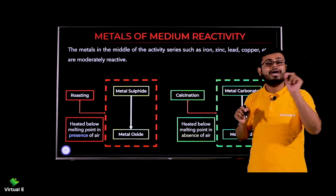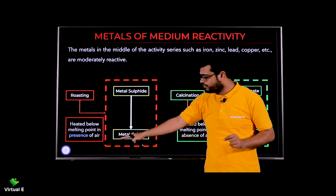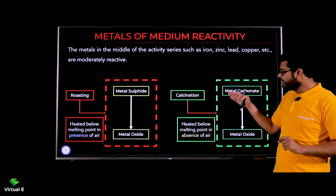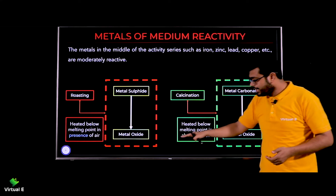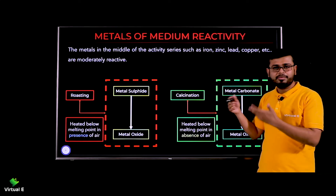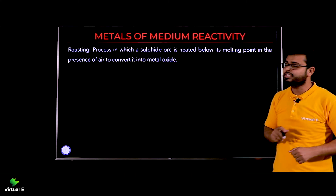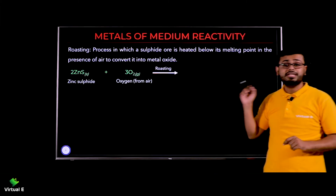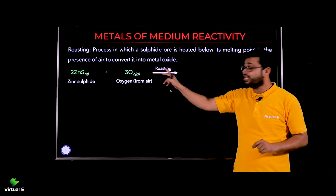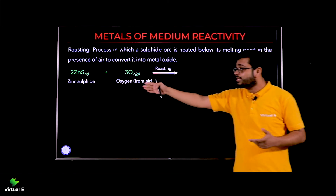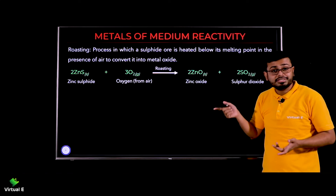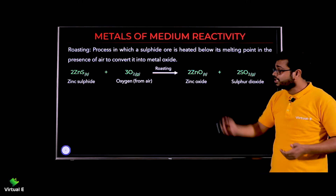So remember: for roasting, metal sulfide is converted to metal oxide by heating below the melting point in the presence of air. Now let's discuss the reaction for zinc. We have zinc sulfide (ZnS) — since it's a sulfide, we do roasting. We heat it in the presence of air (oxygen), and we get zinc oxide plus sulfur dioxide as a byproduct.